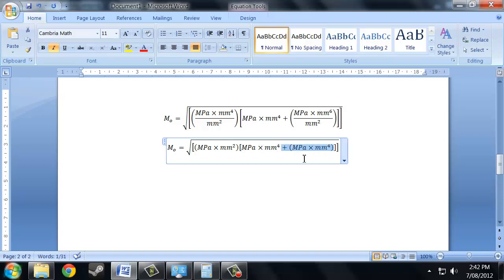Right, now, megapascals times millimetres to the 4 plus megapascals times millimetres to the 4. In terms of our dimensional analysis, this is equivalent. That's not going to tell us anything else about the units. All we're doing is some addition there. I can actually delete that part. Right, now I've got megapascals times millimetres squared times megapascals times millimetres to the 4.